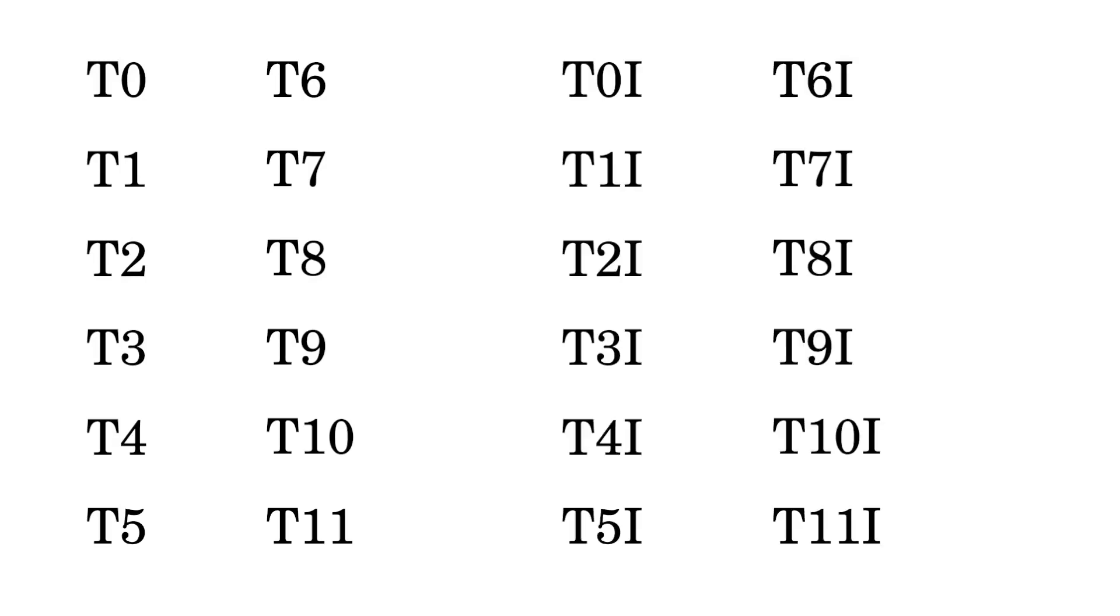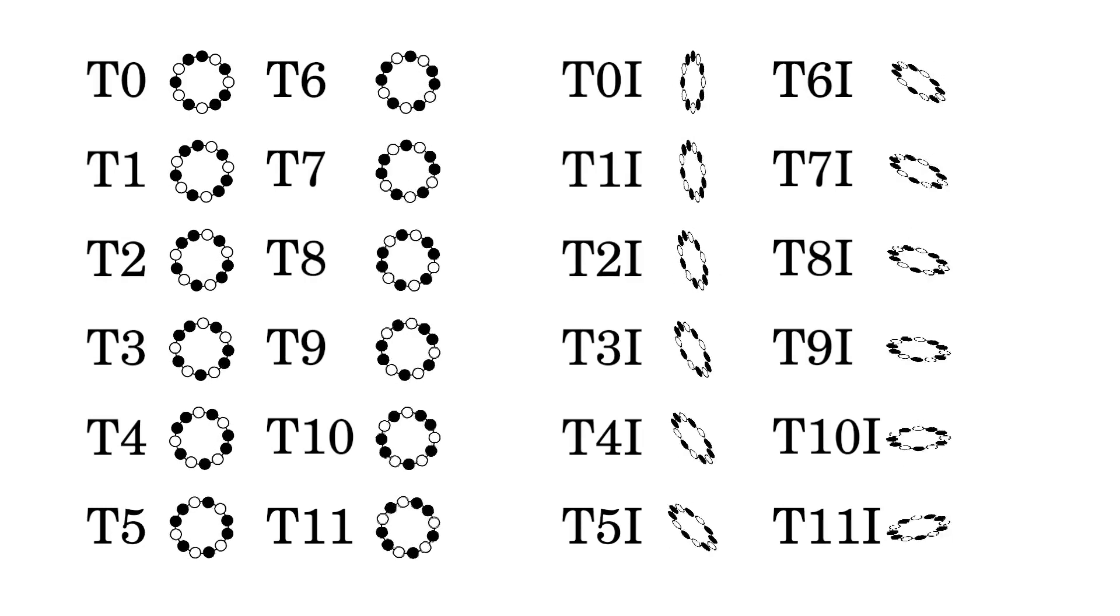If we rotate it by a perfect fourth, then invert the pattern, we get the Locrian scale, which is transformation T6I. Since there are twelve different intervals we can rotate the scale by, and they can all be inverted, there are a total of twenty-four different possible transformations.